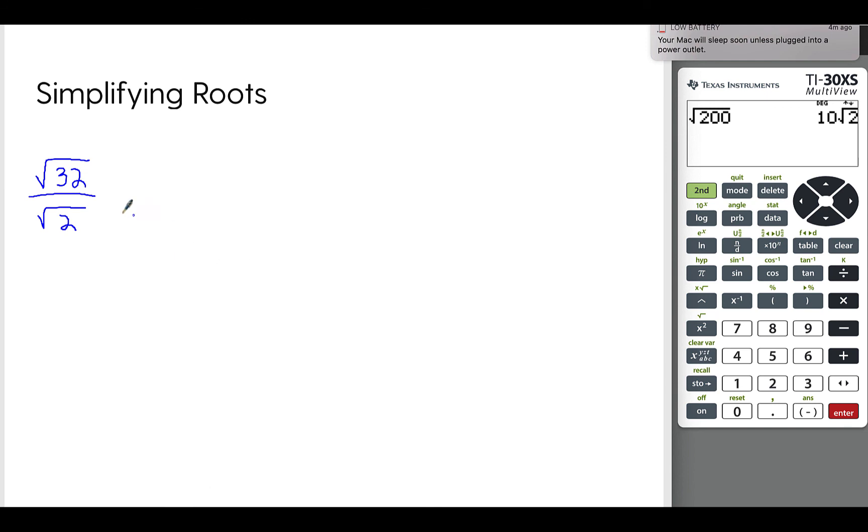So this one is set up as a fraction. The square root of 32 over the square root of 2. You could also think of it like this: the square root of 32 over 2. How many times is 2 going to 32? Well, if you've got to use a calculator, go ahead. No problem. 32 divided by 2 is 16. So now you have the square root of 16, which we just learned is a perfect square. What number times itself is 16? And the answer is 4.